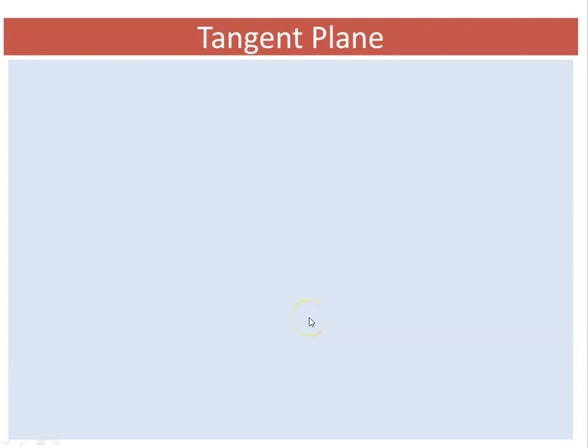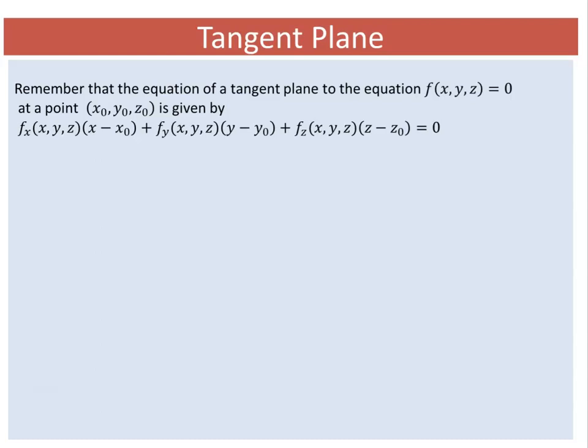Hello everyone, I am discussing the tangent plane. The equation of a tangent plane to a function at a point (x₀, y₀, z₀) is given by: fₓ(x, y, z)(x - x₀) + fᵧ(x, y, z)(y - y₀) + fᵤ(x, y, z)(z - z₀) = 0.